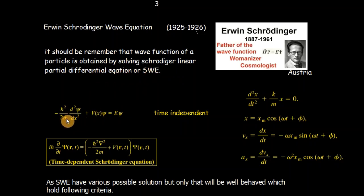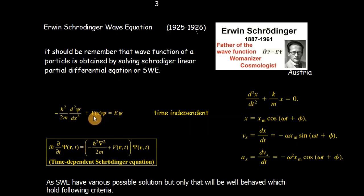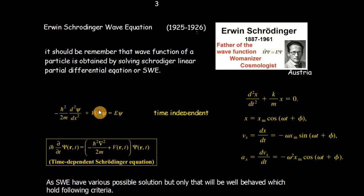The time-independent Schrödinger wave equation is: minus ħ² / 2m (d²ψ / dx²) + Vψ = Eψ, where ħ (h-bar) equals Planck's constant divided by 2π. This is the one-dimensional time-independent Schrödinger equation. In this equation, time is not present, meaning the wave function, total energy, and potential energy are all time-independent.